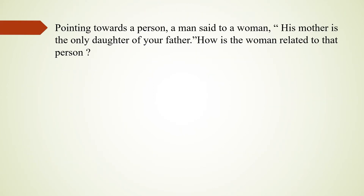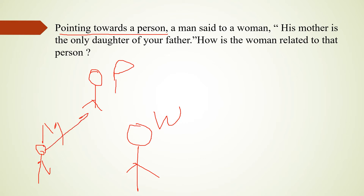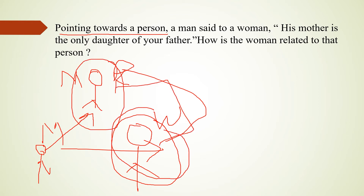Let's draw it out. There is a person being pointed at, there is a man, and there is a woman. The only daughter of your father — that means the woman herself. So the woman is the mother of that person. That is how the woman is related to that person: she is the mother. We can now move on to solve Type 2.